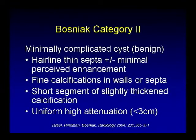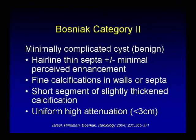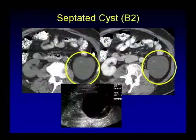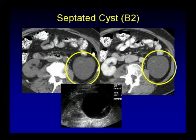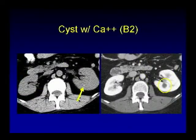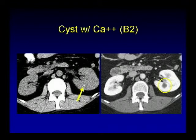Type 2 cysts are minimally complicated but still benign. They may have hairline thin septa, possibly minimally perceived enhancement, fine calcification in walls or septa, short segment of slightly thickened calcification, and uniform high attenuation such as hyperdense, but should be less than 3 cm to be categorized as Bosniak 2. Here's an example of a large cystic lesion from the left kidney with suggestion of calcification within a barely perceivable septa — Bosniak type 2, benign.